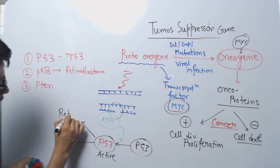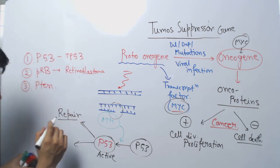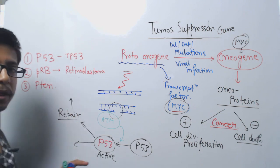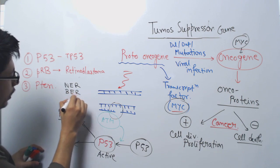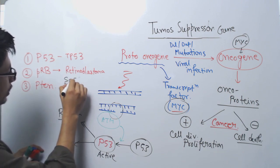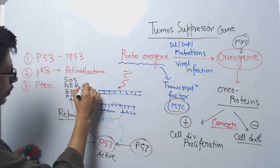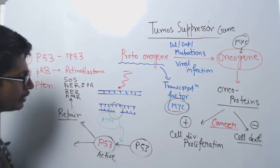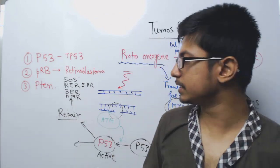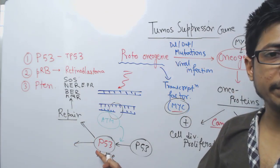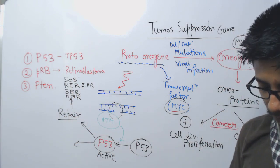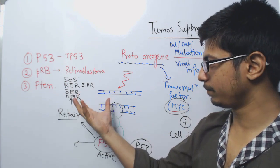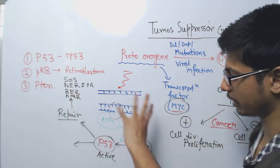One is the repair signal. It will turn on many different repair pathways like nucleotide excision repair, base excision repair, mismatch repair, SOS, and error-prone repair. There are different repair pathways that will be turned on by the activation of P53. It will try to first fix the damage. It brings some experts—these are the pathways—they will try to fix the damage.